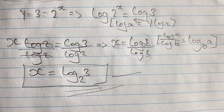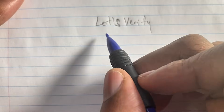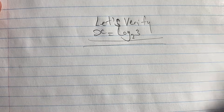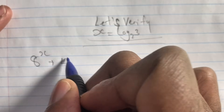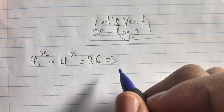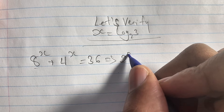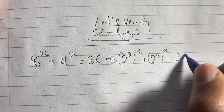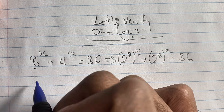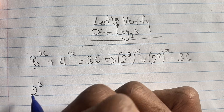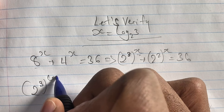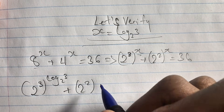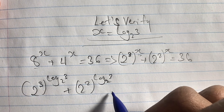Now let's verify that our solution x = log base 2 of 3 is correct. We go back to our original equation: 8^x + 4^x = 36. We substitute the simplified forms: (2³)^(log₂3) + (2²)^(log₂3) = 36, writing out the value of x in each term.